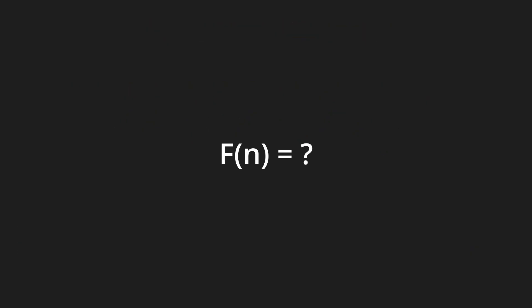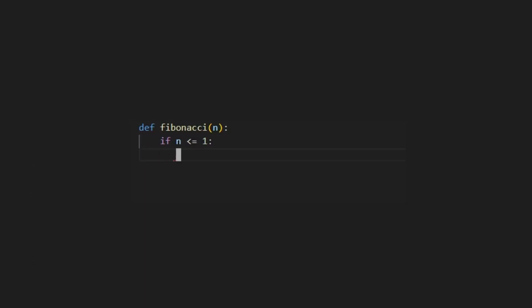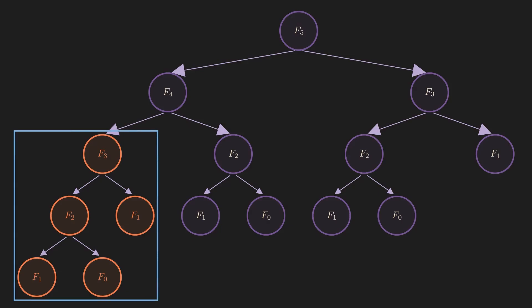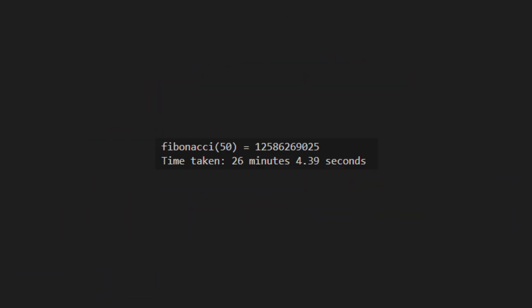Calculating the nth Fibonacci number is a classic example of recursion, so let's start with that. Simple enough, right? This is basically the definition of Fibonacci written down as code. But there is a catch. Take a look at the computation graph. Do you see the problem? We are recomputing the same values again and again. For example, the subtree on the left is exactly the same as the subtree on the right. And that makes recursion painfully slow.